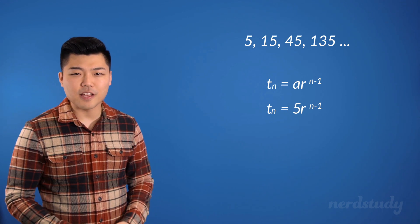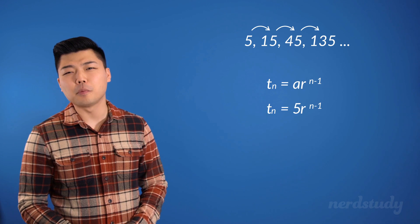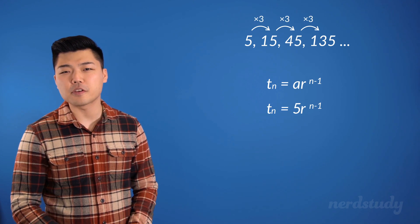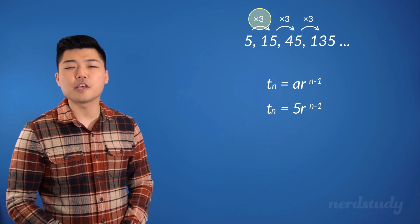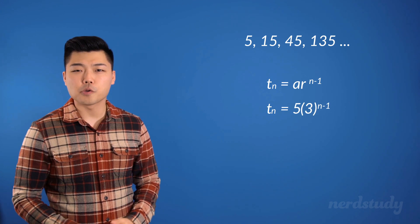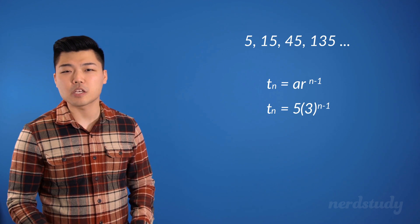And we can also see that each term is a result of multiplying 3 with its previous term. So that makes our common ratio here denoted by r equal to 3. So there is our geometric sequence formula.